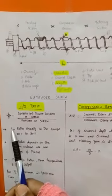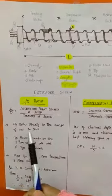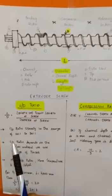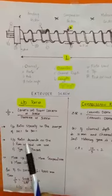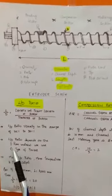L by D ratio usually in the range of 20:1 to 30:1. This L by D ratio depends on the raw material we use and the type of process.